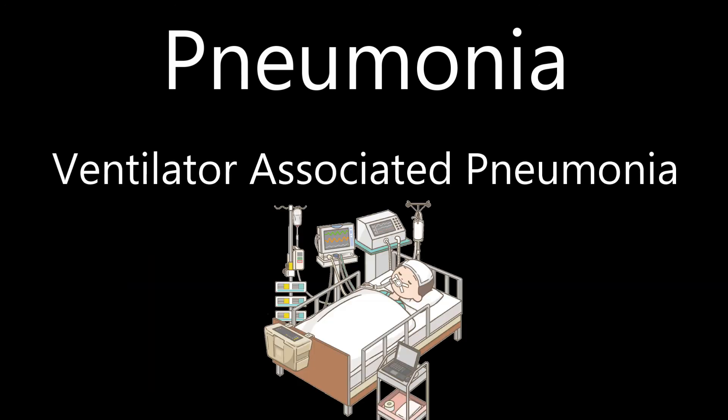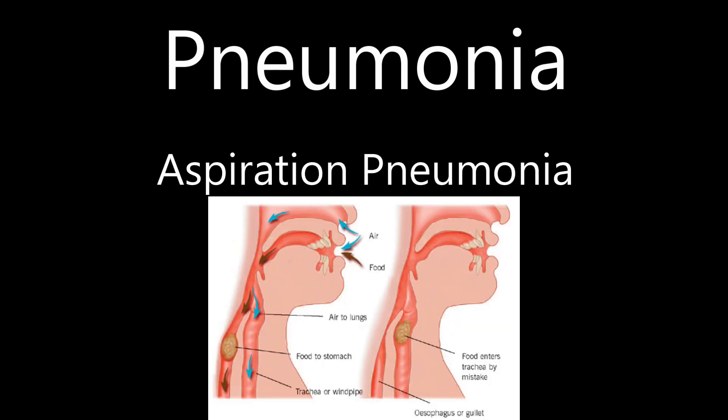Ventilator associated pneumonia is due to the lack of ability to cough properly — microbes may be in the tubing and inhaled by the patient. Aspiration pneumonia occurs when you inhale food, drink, vomit, or saliva into your lungs. It is more likely if something disturbs your normal gag reflex so you can't cough it up, and it's often referred to as going down the wrong pipe.